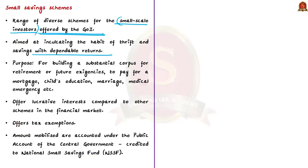Small savings schemes help build a substantial corpus for retirement and emergencies — for example, to pay for a mortgage, child's education, marriage, or a medical emergency. They encourage savings for future needs and offer profitable interest compared to other schemes in the financial market, as well as tax exemptions.